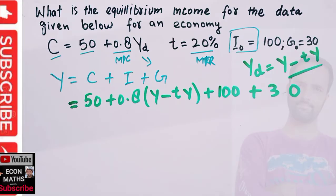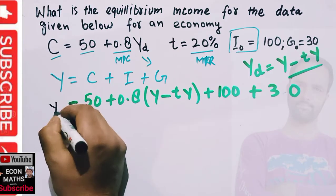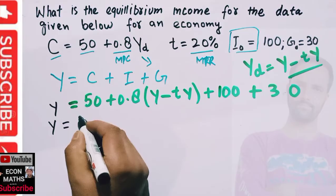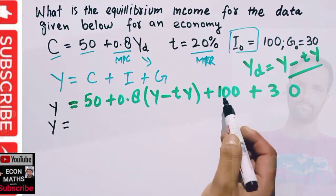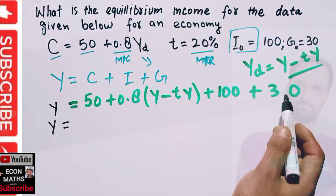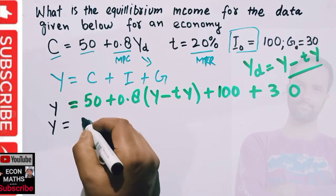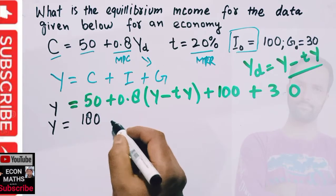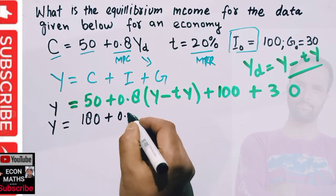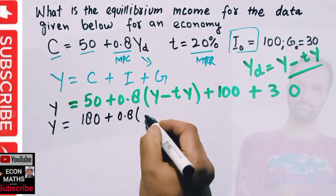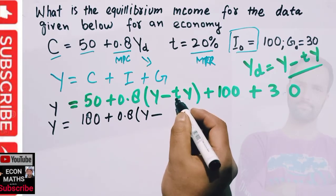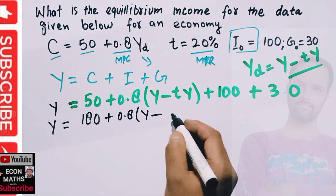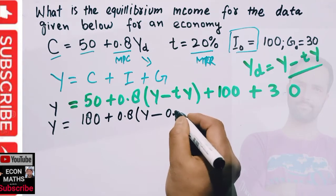So I can write this as 180 plus 0.8 times (Y - tY). Since t is 20%, that's 0.2. So Y = 180 + 0.8(Y - 0.2Y), which is 180 + 0.8(0.8Y).